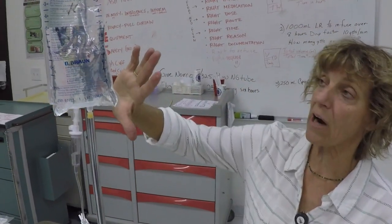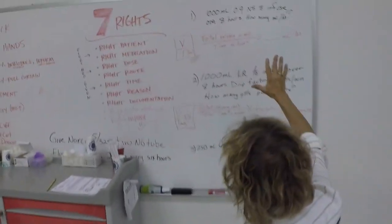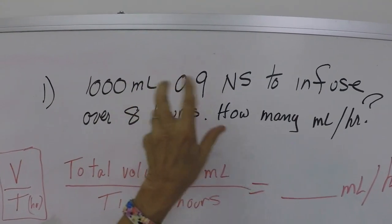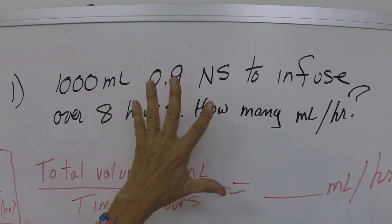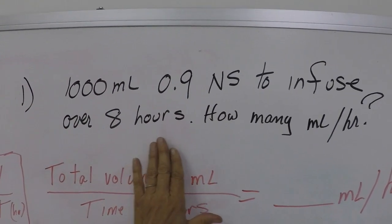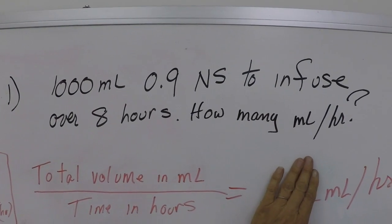How many ml per hour? So let's go over here. If we have a thousand ml bag and it doesn't matter what we've got in the bag, okay, so don't get thrown off by that. We have a thousand ml's to infuse over eight hours. How many ml per hour are we going to have?